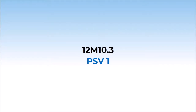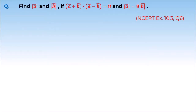Now the concept we have studied, we will solve a question based on it. In this question, we have to find out the magnitude of A vector and B vector, where A vector plus B vector dot A vector minus B vector is equal to 8, and magnitude of A vector is equal to 8 times magnitude of B vector.